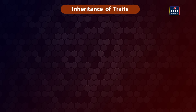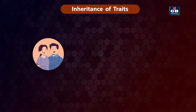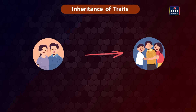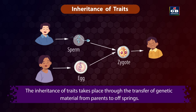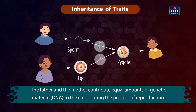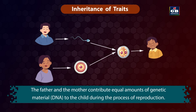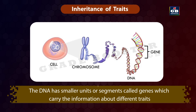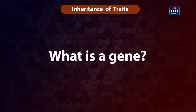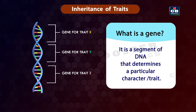The inheritance of traits takes place through the transfer of genetic material from parents to offspring. The father and the mother contribute equal amounts of genetic material or DNA to the child during reproduction. DNA has smaller units called genes which carry information about different traits. A gene is a segment of DNA that determines a particular character or trait.